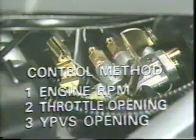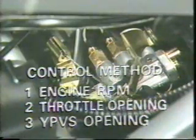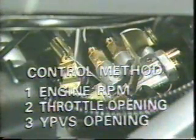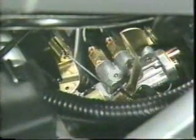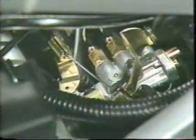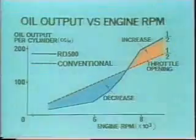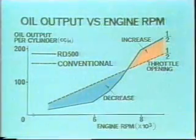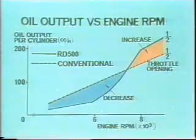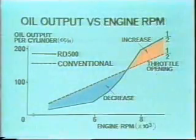We will now review the mechanism and operation of the auto lube pump. The RD500 oil pump output is controlled by three different means. Oil consumption is reduced in the low to middle speed ranges and increased in the high speed range. As a result, the total oil consumption has been reduced.